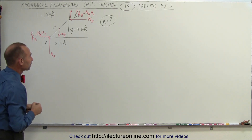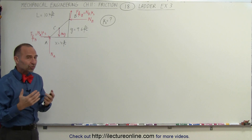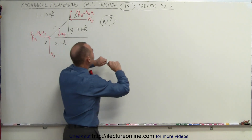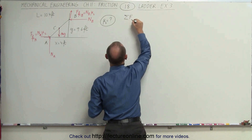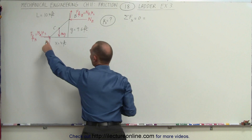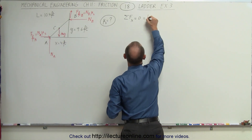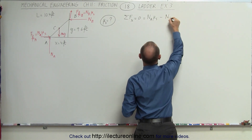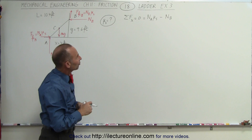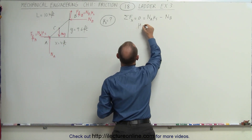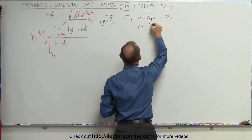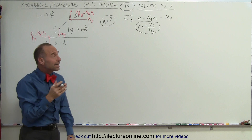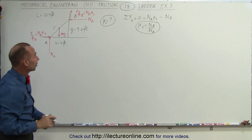We start by setting the sum of all forces in the x direction equal to zero. That gives us the normal force at A times the coefficient of friction minus the normal force at B equals zero. We can then isolate μs to get μs = Nb / Na. We likely don't even need the sum of forces in the y direction, since we already have a useful relationship between the two normal forces and μs.